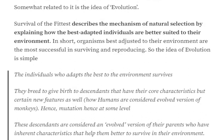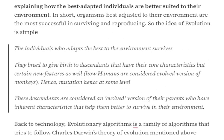The idea of evolution is related to this concept of survival of the fittest. The individuals who adapt best to the environment survive. Now, those individuals breed to give birth to their descendants — their children. These children inherit certain characteristics of both parents as well as some new characteristics. Some mutation has happened at the descendant level. Mutation means certain slight changes from the core characteristics. These descendants are called the evolved version of their parents, or more suited for the environment.